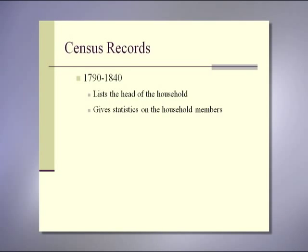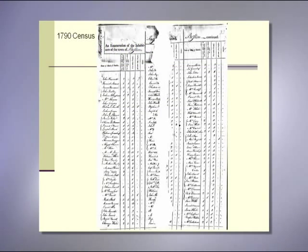Census records from 1790 until 1840 generally list just the head of the household and give statistical information on everyone else in the household. The head of the household can include a man, a woman, or a free African American. This example from the 1790 census shows the condition some of the records were in when we received them. The person on the second line is Samuel Adams and on the first line is John Hancock.